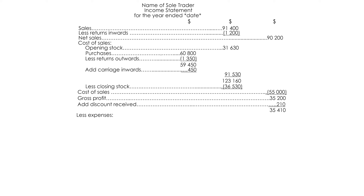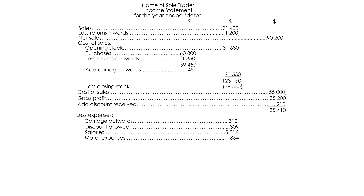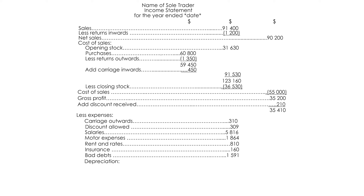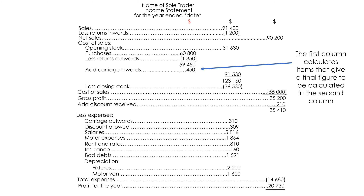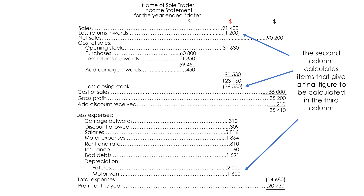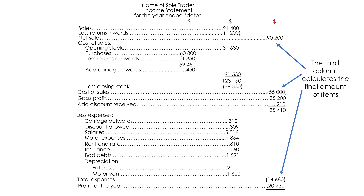Add discount received. Less expenses: carriage outwards, discount allowed, salaries, motor expenses, rent and rates, insurance, bad debts, depreciation. Total expenses. Profit for the year. The first column calculates items that give a final figure to be calculated in the second column. The second column calculates items that give a final figure to be calculated in the third column. The third column calculates the final amount of items.